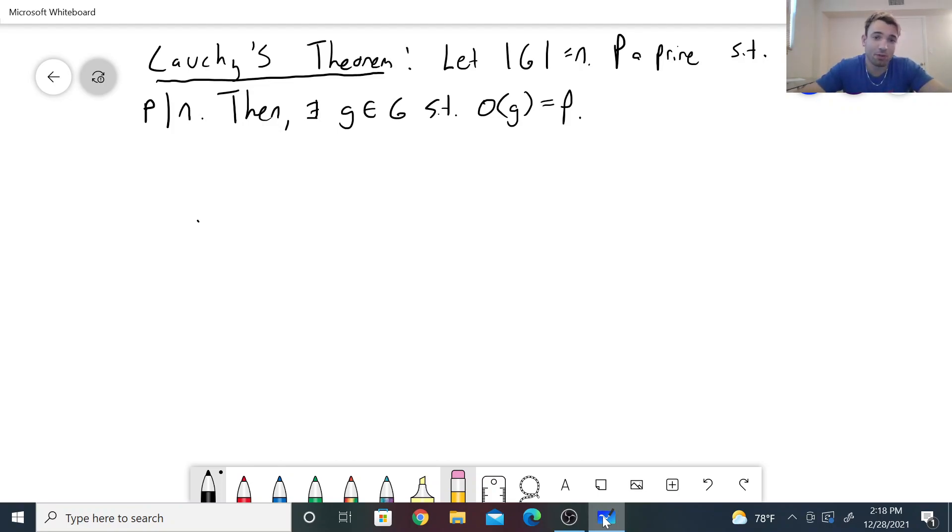Hello, today we'll be going over Cauchy's theorem. Cauchy's theorem can be viewed as a partial converse to Lagrange's theorem and states that if you have a finite group of order n, and p is a prime that divides n, then there exists an element g inside the group such that the order of g is equal to p.